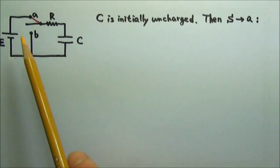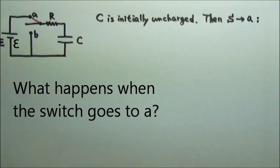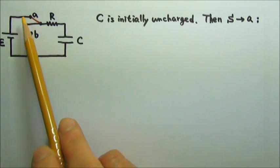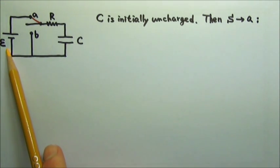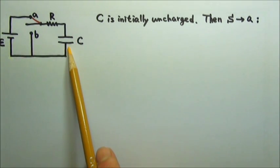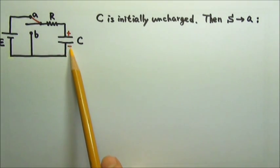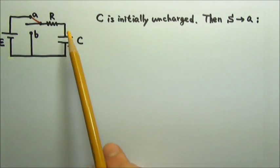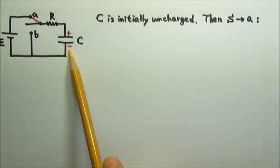Then the switch goes to A. When the switch goes to A, the battery with EMF E is connected to the circuit. Because of the potential difference provided by the battery, charges begin to flow onto the plates of the capacitor. Positive charges go onto the top plate and negative charges onto the lower plate. In reality, the negatively charged electrons get pulled off the top plate and dumped onto the lower plate.